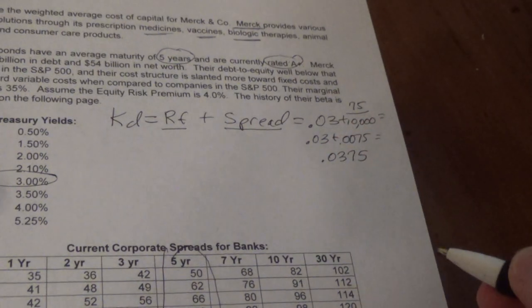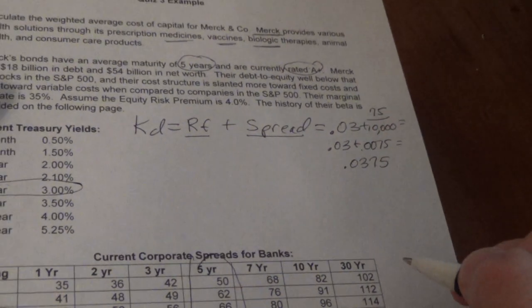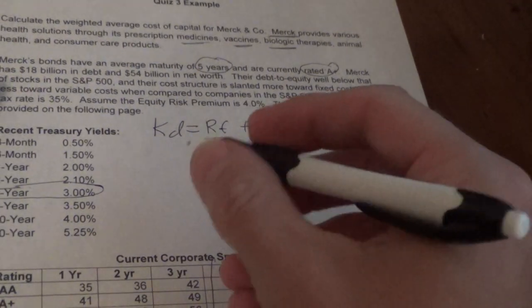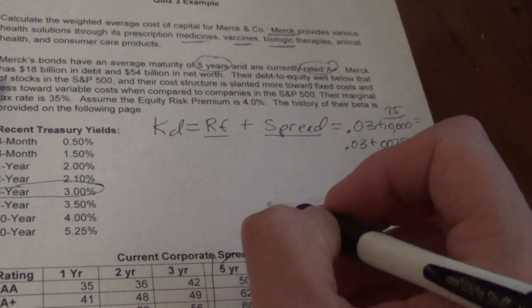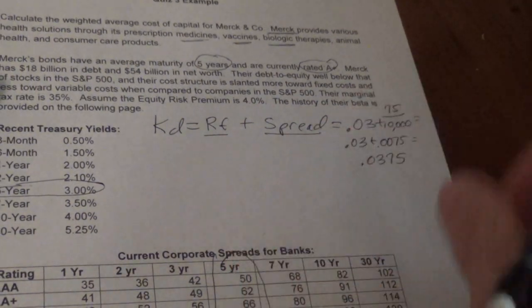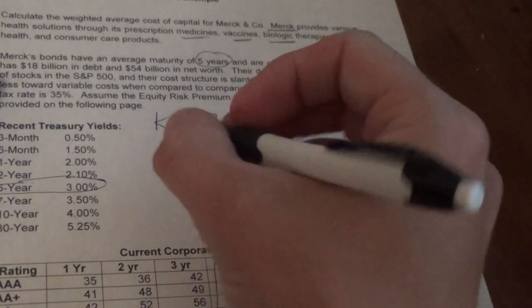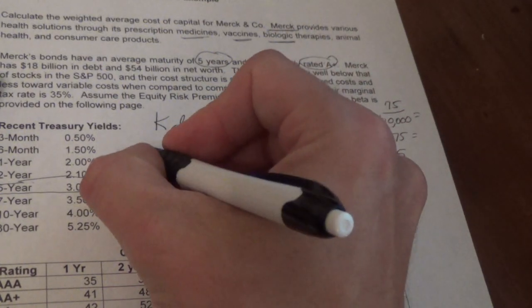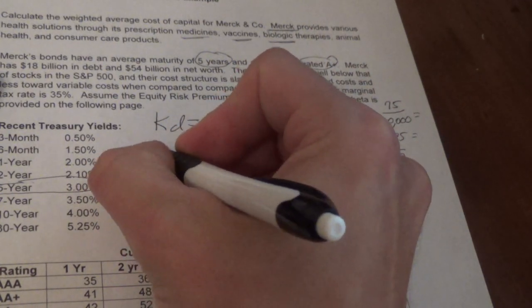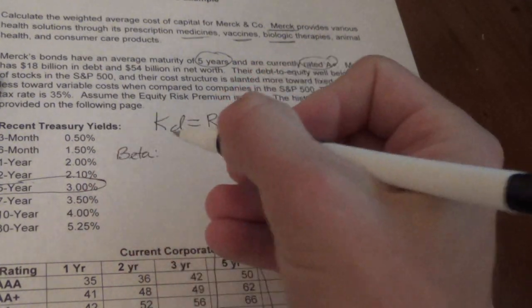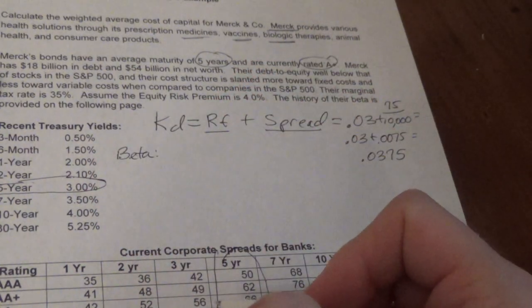So we've got the cost of debt. Now we need the cost of equity. In doing the cost of equity we have a few things to consider in coming up with the beta. Remember there are 4 things to consider in coming up with beta.